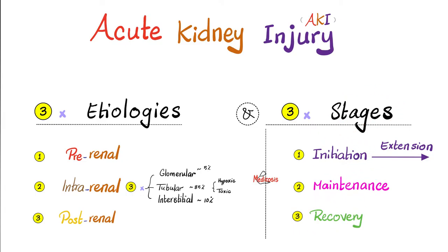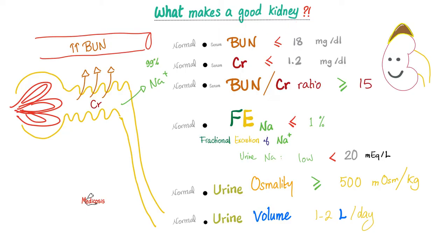The three stages of AKI are initiation, maintenance, and recovery. A good kidney keeps serum BUN below 18, creatinine below 1.2, and the BUN-to-creatinine ratio above 15. It does not waste sodium — the fractional excretion of sodium (FENa) should be less than 1%, and urine sodium less than 20 mEq/L. A good kidney concentrates urine with osmolarity greater than 500, and produces between one and two liters of urine per day.